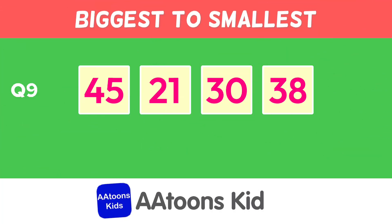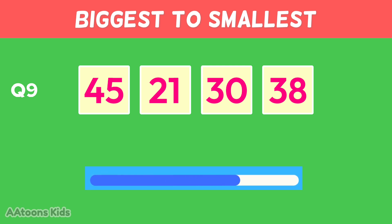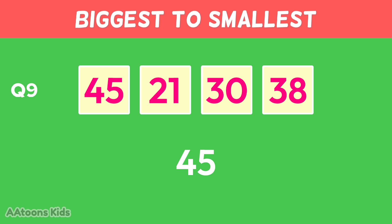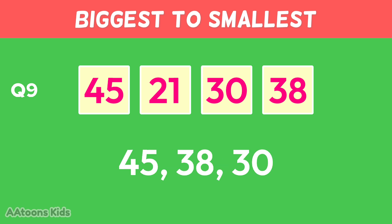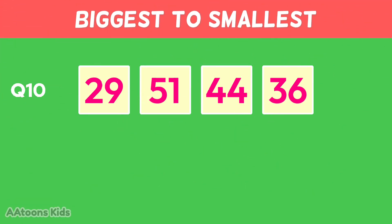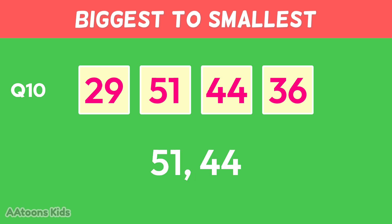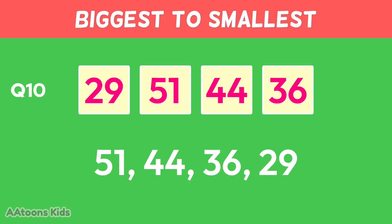Arrange these numbers from biggest to smallest. Arrange these numbers from biggest to smallest: fifty-one, forty-four, thirty-six, twenty-nine.